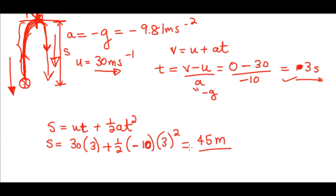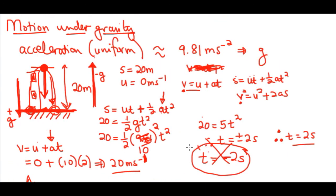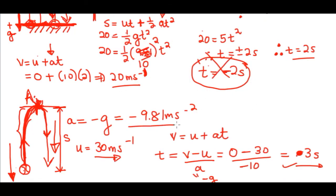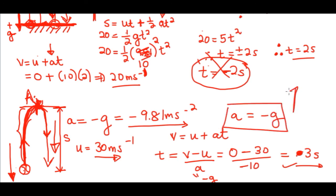That is motion under gravity. The key point to emphasize: if you are moving upward, your acceleration is negative g, because you move opposite to the direction of gravity which faces downward. If you are moving downward, your acceleration is positive g, because you now move in the direction of gravitational acceleration. In the next video, a new concept will be introduced.